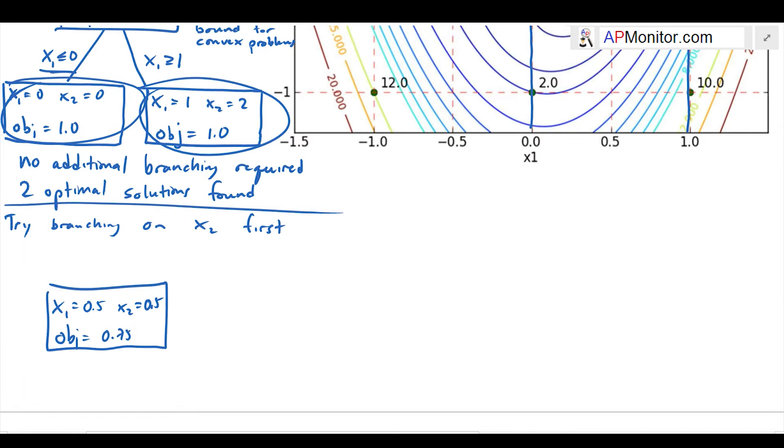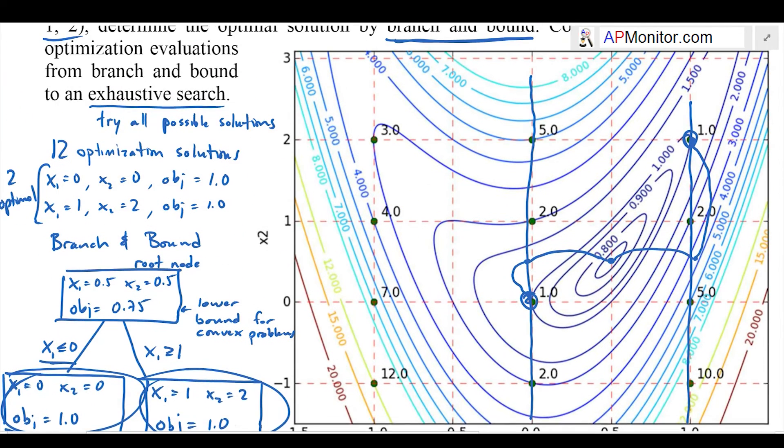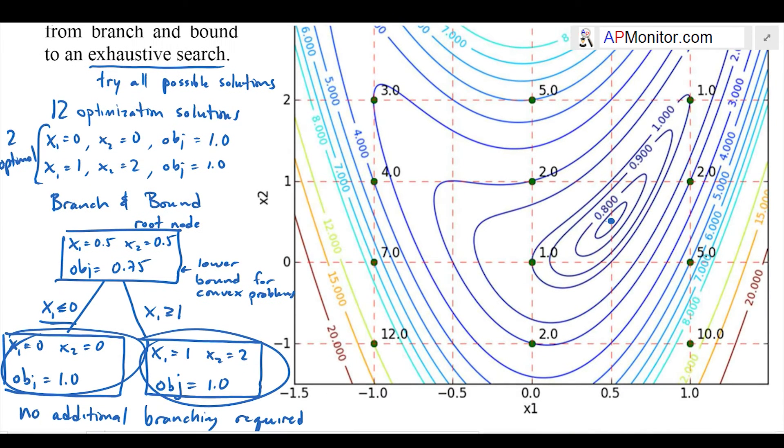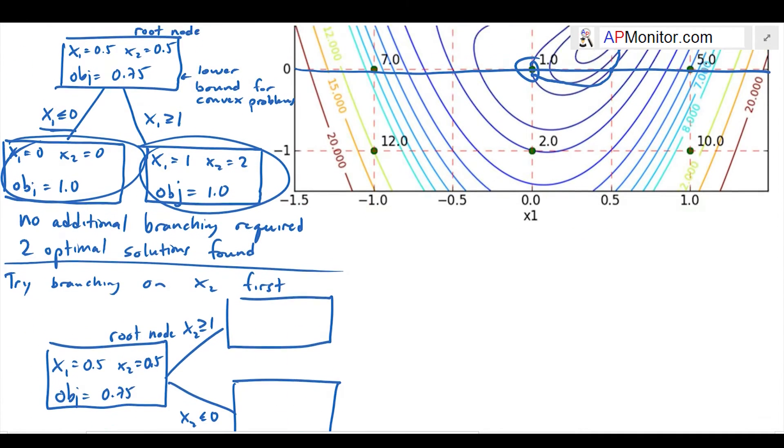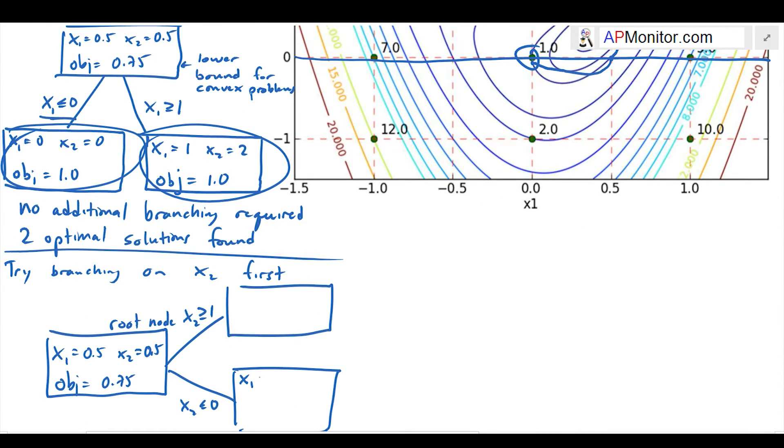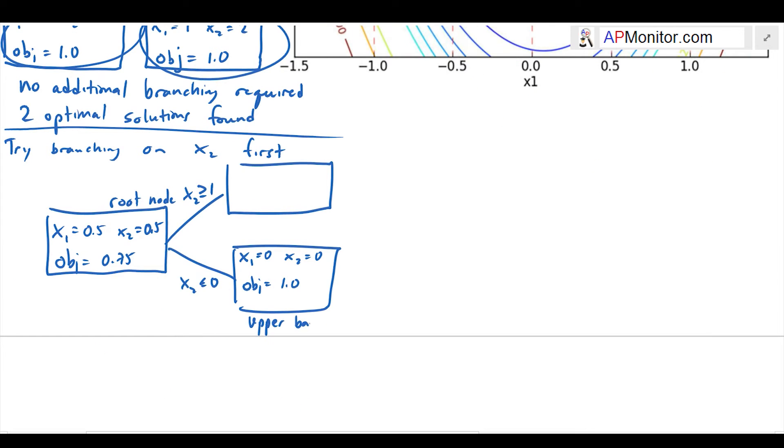I have my same root node, the relax problem. I'm going to go ahead and compute the first one, which is x2 less than or equal to 0. It came up with one of my optimal solutions. This is an integer solution and I know this is going to be an upper bound. Any integer solution, the best integer solution is going to be an upper bound.